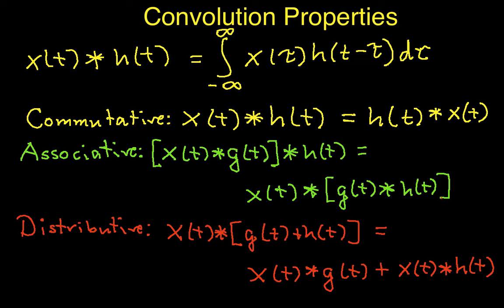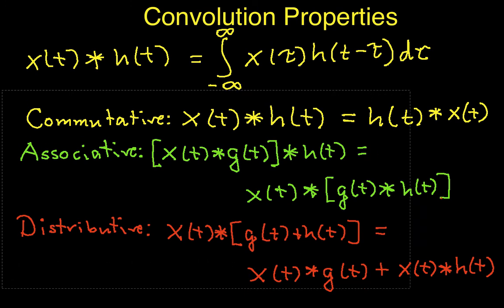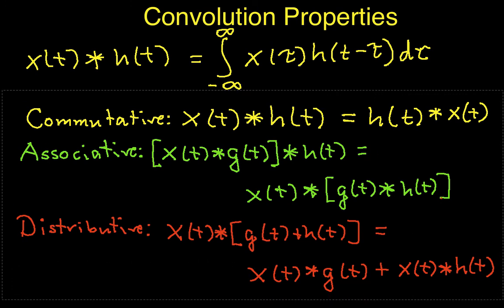One other property of convolution, which turns out to be important, particularly when you start looking at the modulation of communication signals, is what happens when you convolve a function with a delta function.